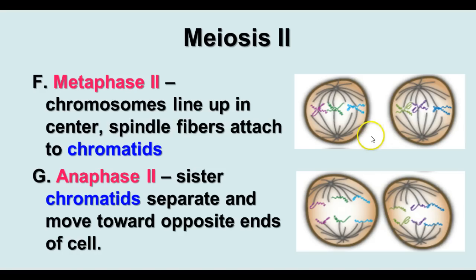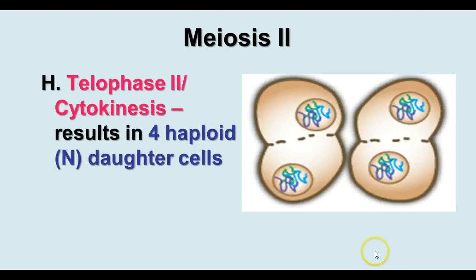In meiosis II, the cell skips interphase and goes straight to prophase II and then metaphase II, where the chromosomes line up in the middle of the cell and spindle fibers attach to the chromatids. In anaphase II, the centromeres split and sister chromatids separate, moving toward opposite ends of the cell. In telophase II and cytokinesis, we end up with four haploid daughter cells, each with individual single chromatids that are now chromosomes.